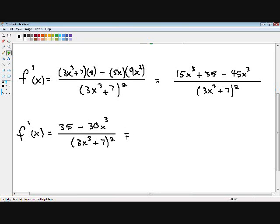Now we need to factor the numerator because you see that the 35 and the 30x cubed both have a 5 in common. I'm going to take out the 5. Then we're left with the 7 minus 6x cubed.